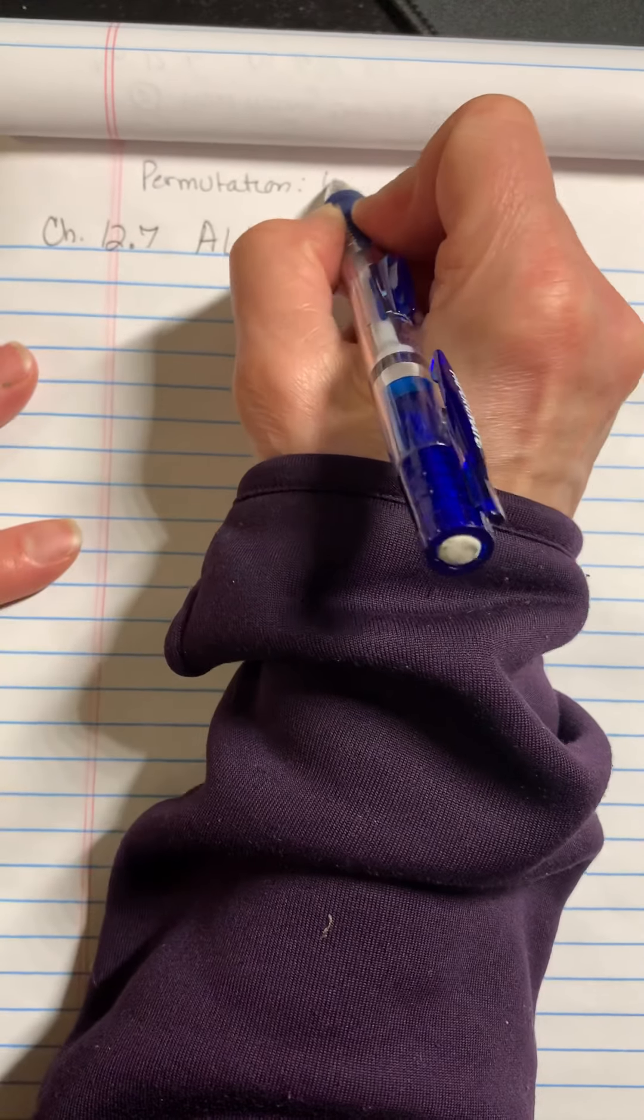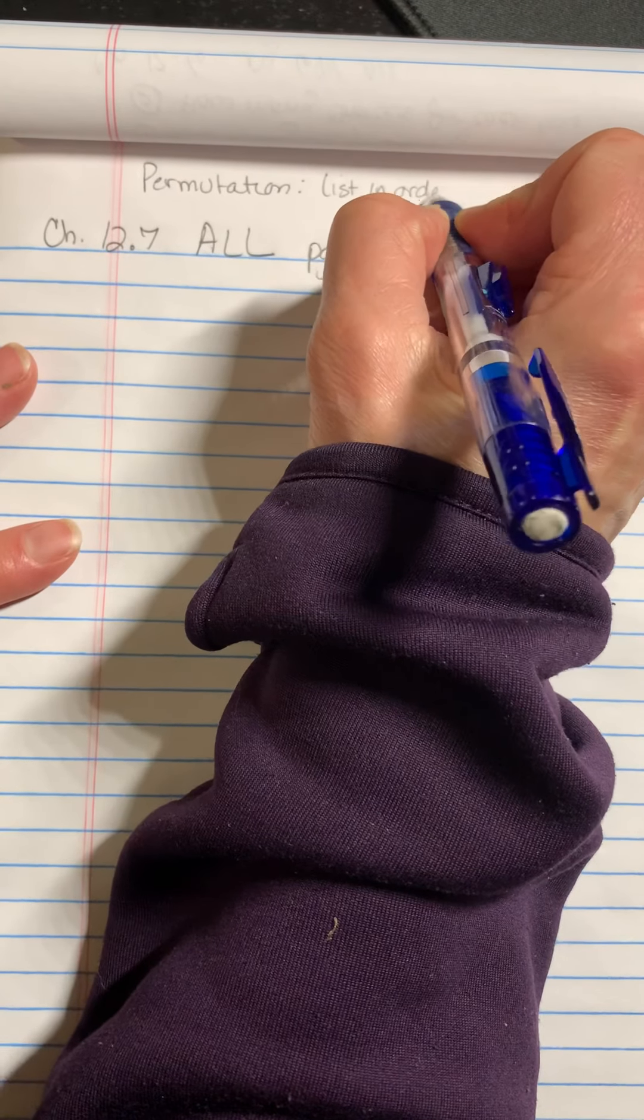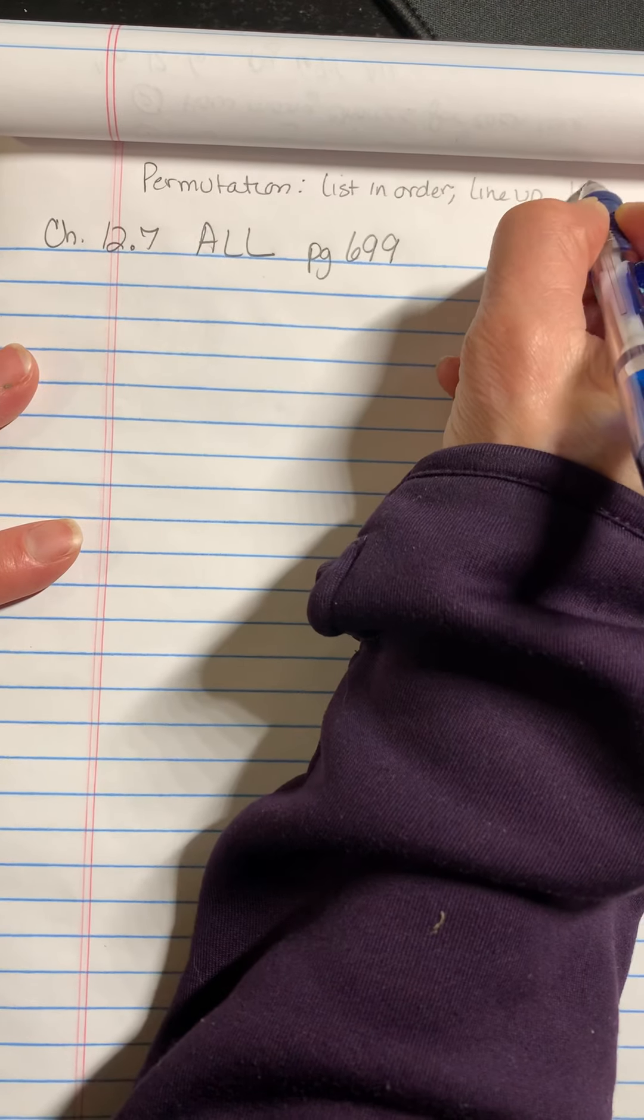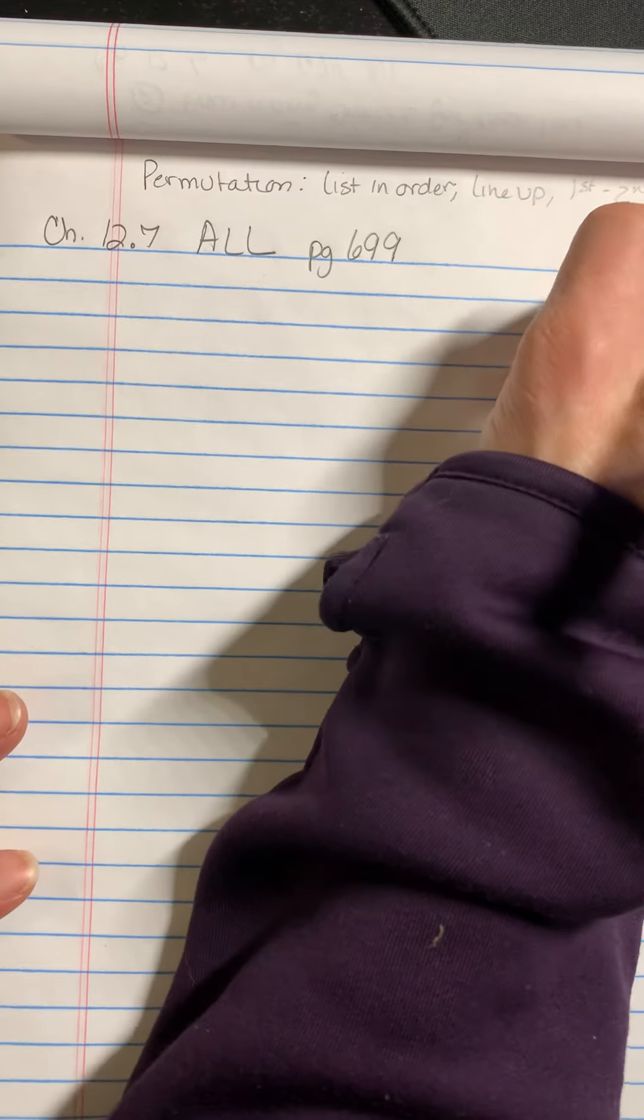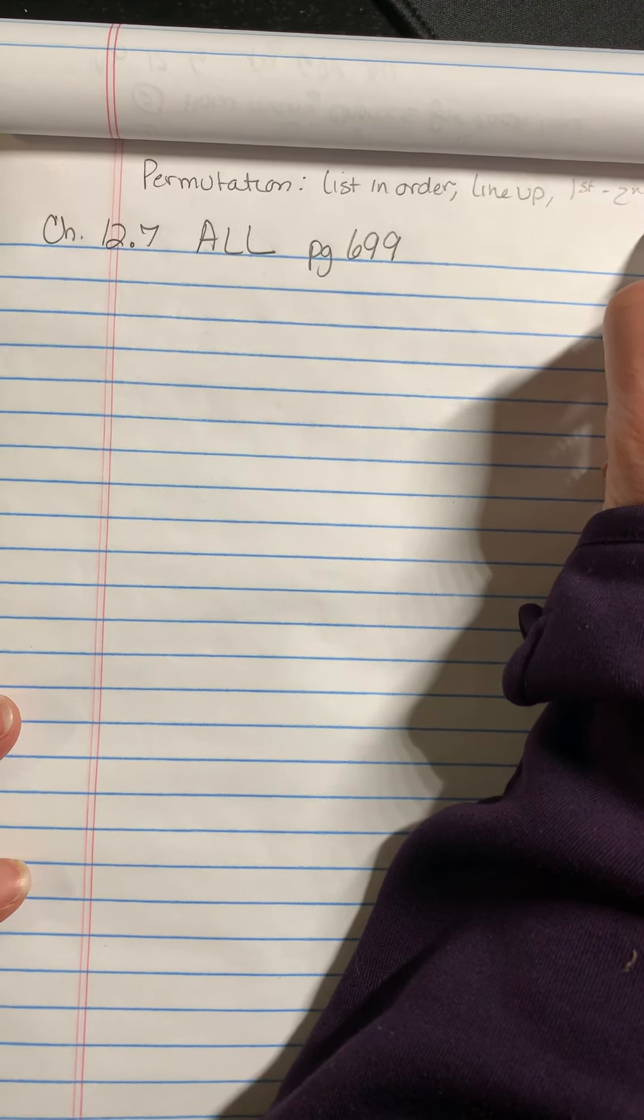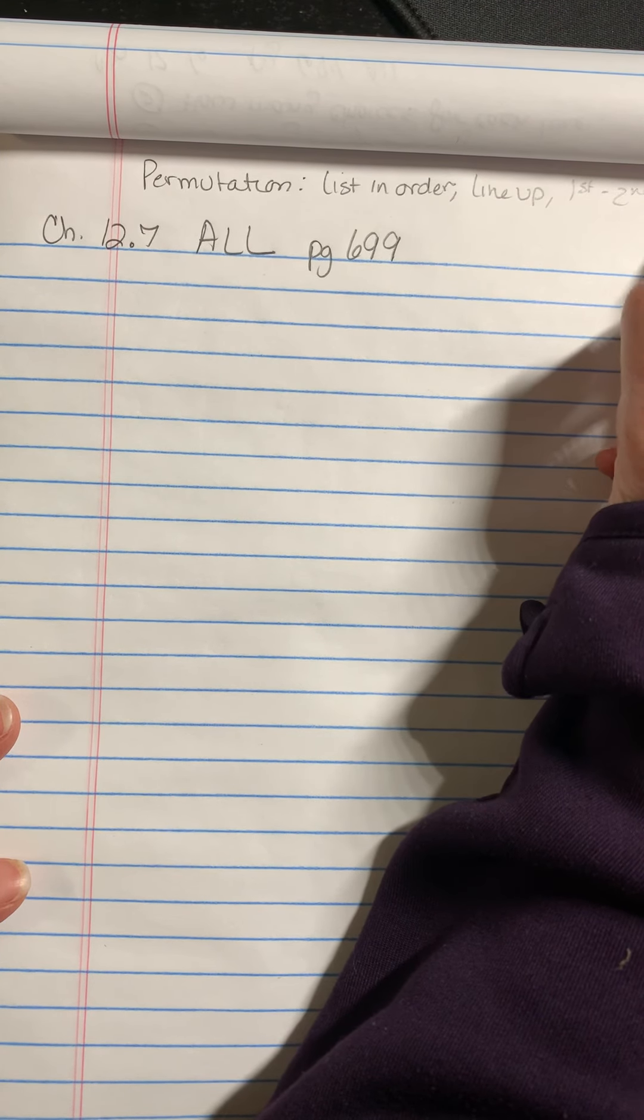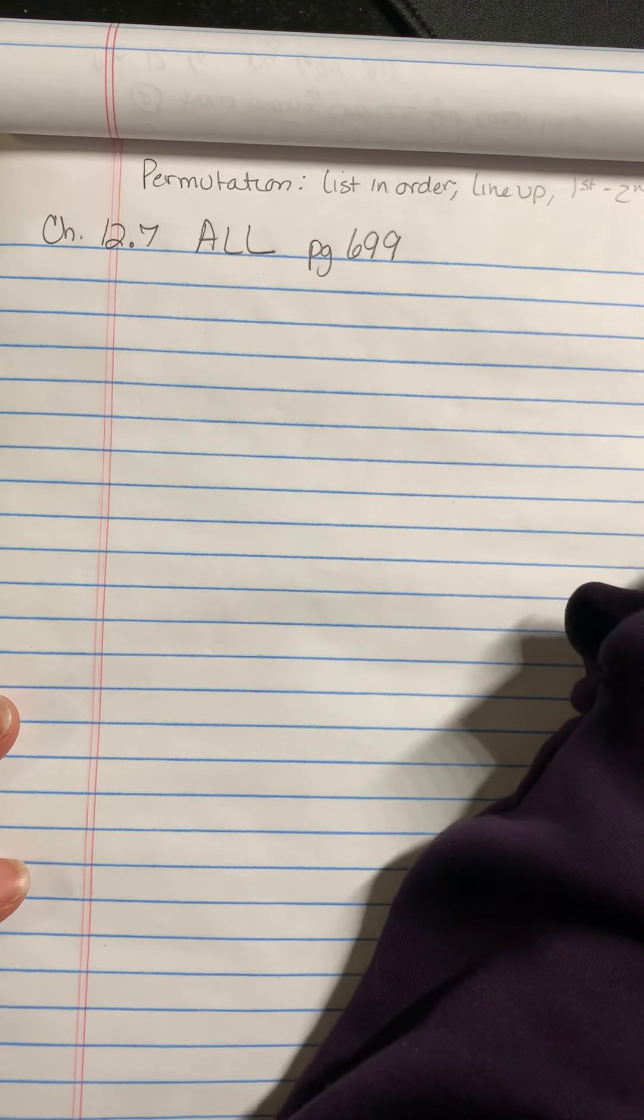So remember, permutations are like lists in order. Line it up. First place, second place, so on. That's when order matters, and you say to yourself, how many things do you get to do, and you put that many lines down. How many choices do you have for the first one? How many choices for the second and the third? And then you just multiply.